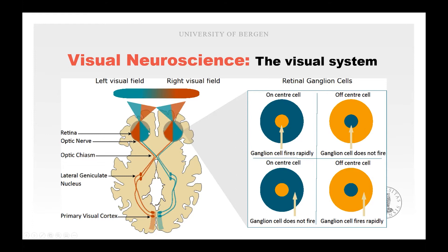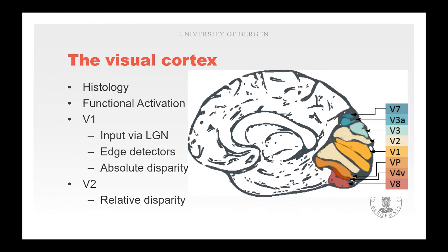From the retina the information travels through the optic nerve, through the optic chiasm where the left visual field travels to the right visual cortex and the right visual field travels to the left primary visual cortex, through the lateral geniculate nucleus in the hypothalamus, which also conducts some signal-boosting effects. The visual cortex is divided based on histology, and this is also reflected in functional activation.